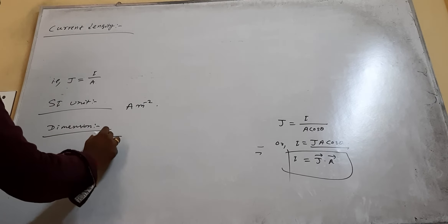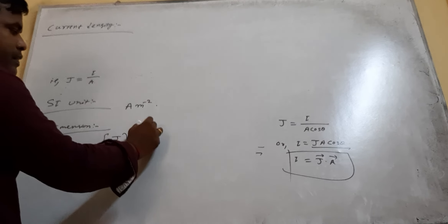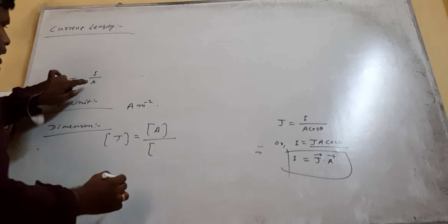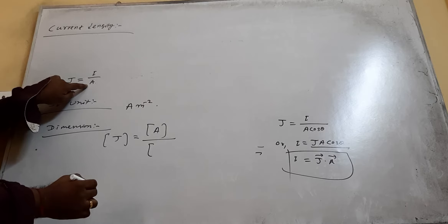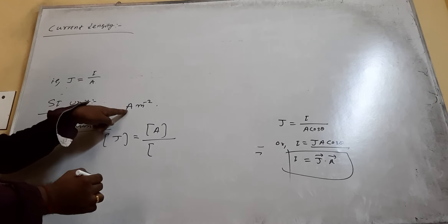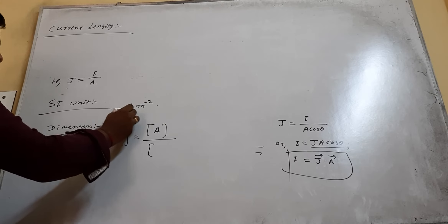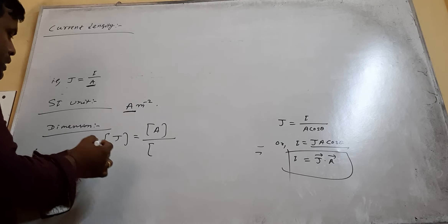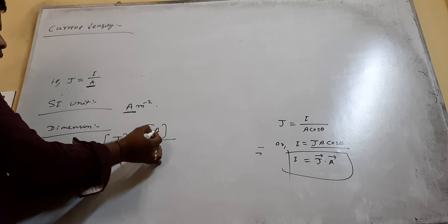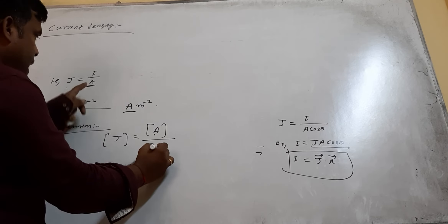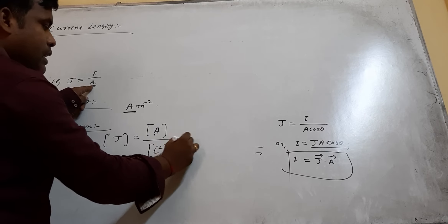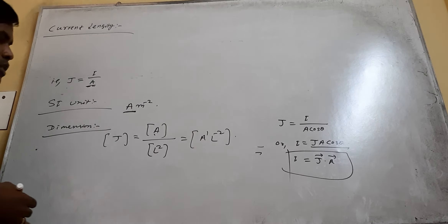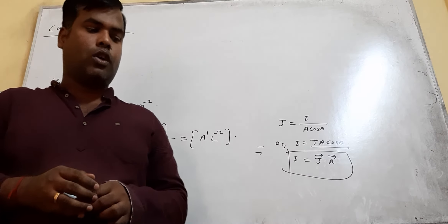The dimension of current density: current dimension is A (ampere) and area dimension is L², giving J dimension as A1L-2. This is the dimensional formula of current density.